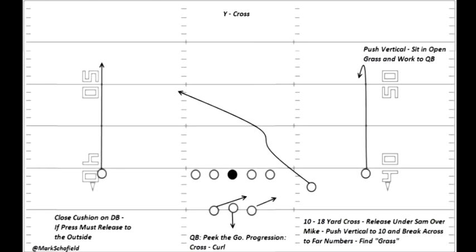Today I'm taking another look at progression reads, examining California quarterback Jared Goff as he works through the Y-Cross concept. This play is a staple of the air raid offensive scheme that has its origins with LaVell Edwards in his days at Brigham Young University, and now is being run by coaches such as Mike Leach and Sonny Dykes. This play design gives the quarterback anywhere from three to five progression reads on the play, depending on the formation, the personnel, and whether the running back or backs on the field have pass protection responsibilities.